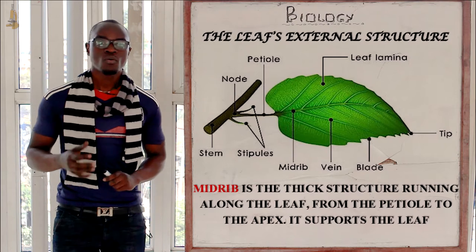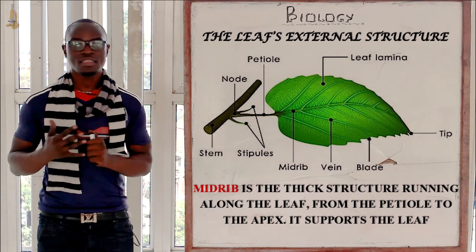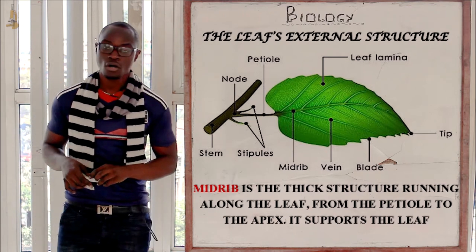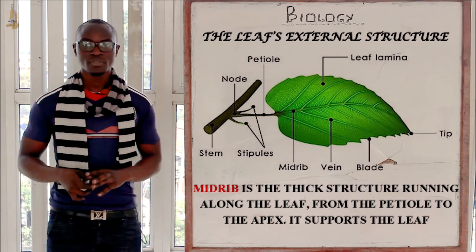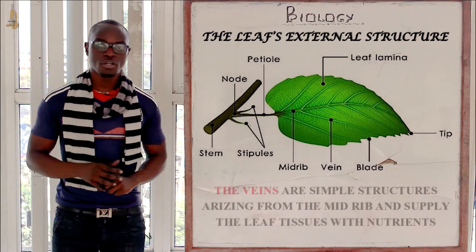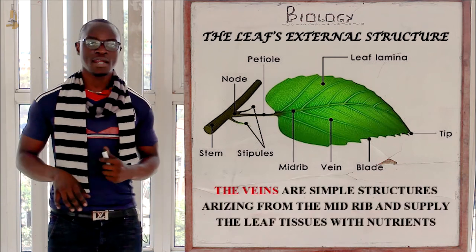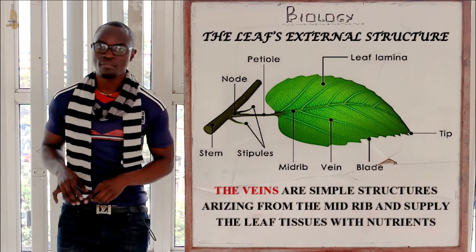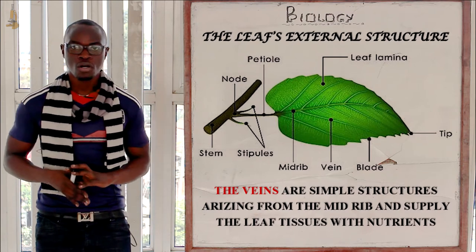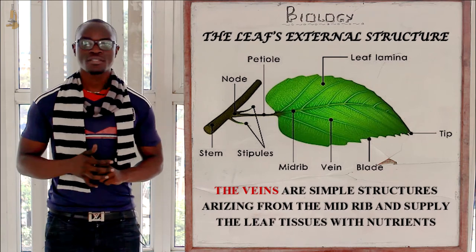The second part of the leaf we are going to look at is the midrib. The midrib is a thick structure that runs along or across the leaf. Next we are going to look at the veins. The veins arise from the midrib and they connect every tissue of the leaf with the necessary nutrients.